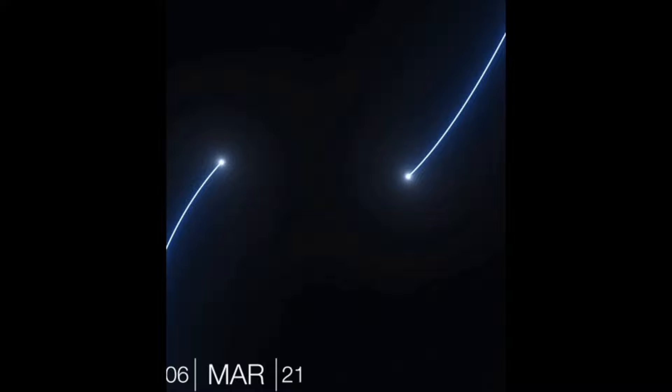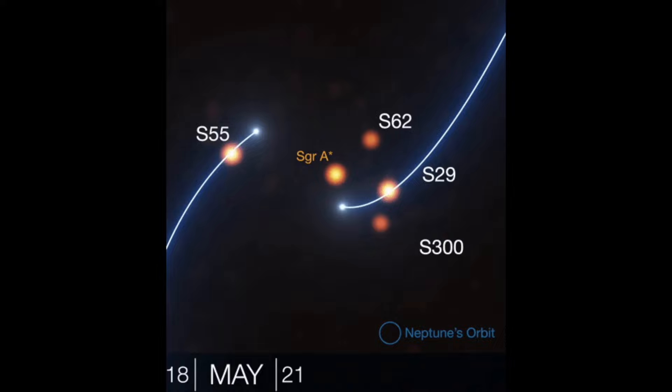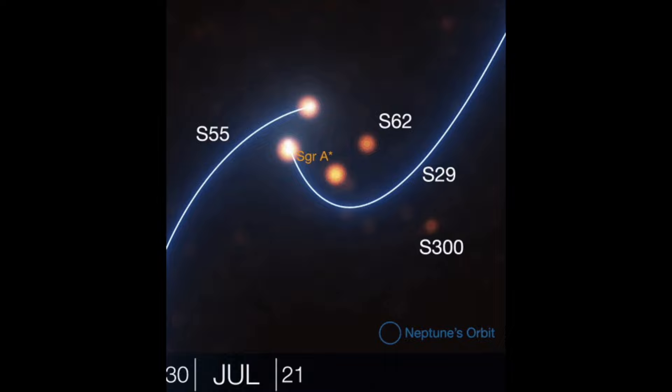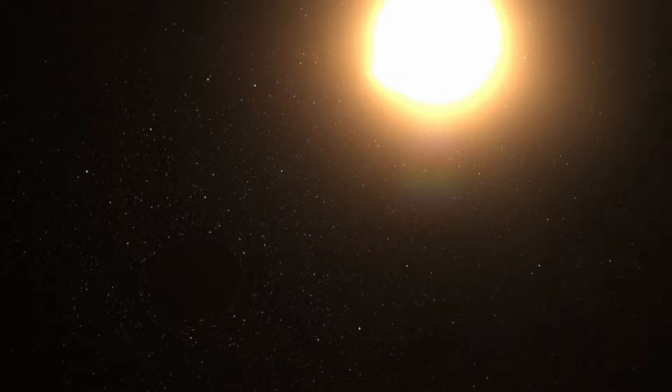In July 2018, the orbit of S-2 around Sagittarius A-star was observed, reaching speeds of 7,650 kilometers per second, or 17.1 million miles per hour, or 2.55 percent the speed of light, as it approached pericenter in May 2018 at about 120 astronomical units, or 18 billion kilometers, or 11 billion miles, from the black hole.